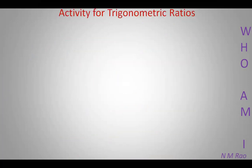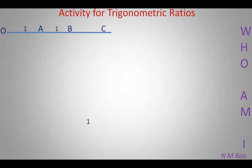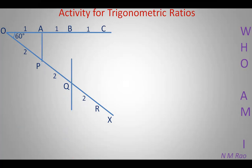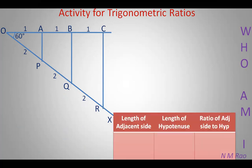Now let us do some activity for trigonometric ratios. First, draw a horizontal line with initial point O. Mark the points A, B, C at distances of 1, 2, and 3 cm respectively. Now draw a ray OX such that angle COX is 60 degrees. Now mark points P, Q, R at distances of 2, 4, and 6 cm respectively. Now join AP — it looks like a perpendicular. Join BQ — it looks perpendicular to OC. Join CR — it is perpendicular to OC. Now make a table.